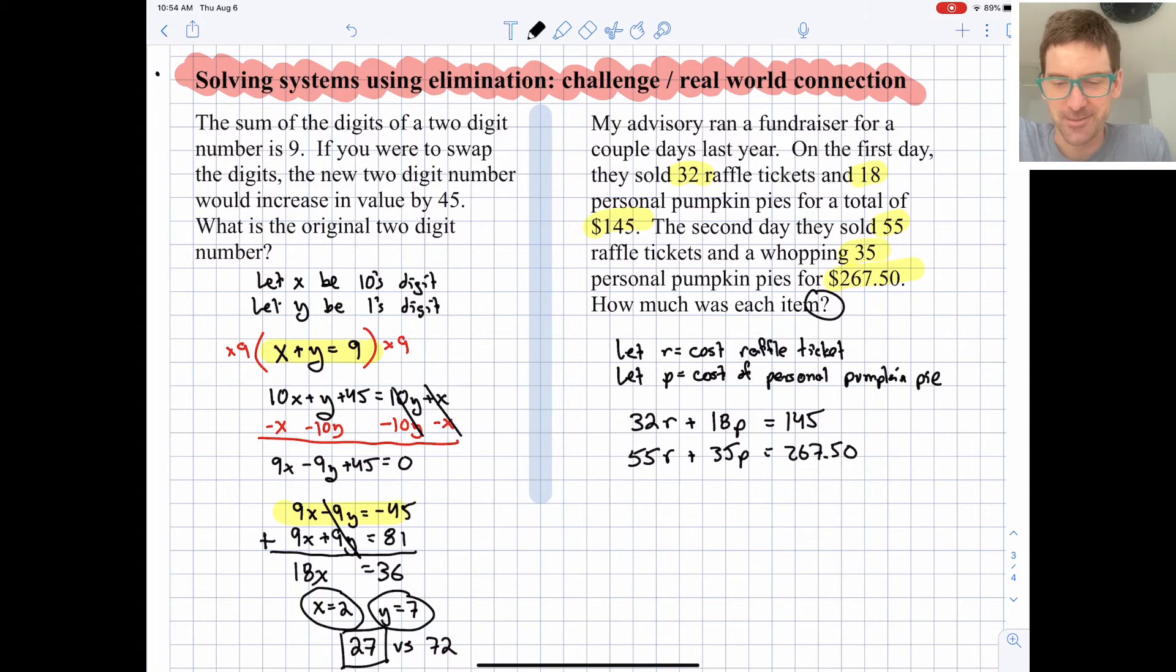So we want to eliminate, and 32 and 55, 18 and 35 don't have any easy common factors. So let's just go big here, and multiply this through by 55, and multiply this through by 32. Actually, how about a negative 32? Okay, and let's see what we end up with.